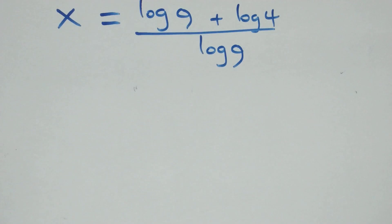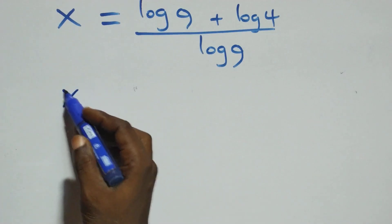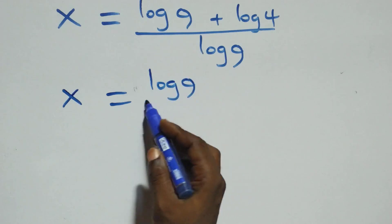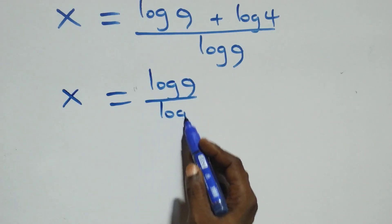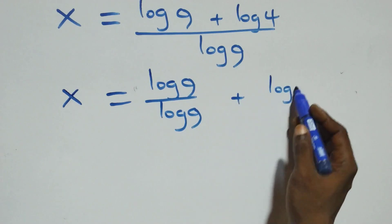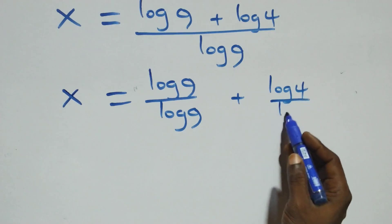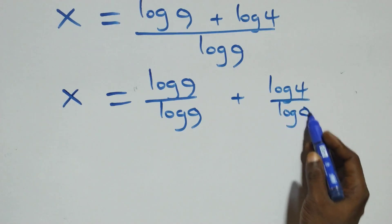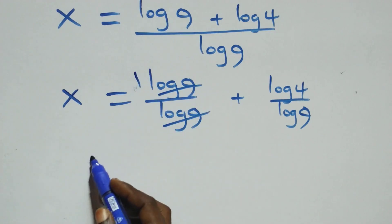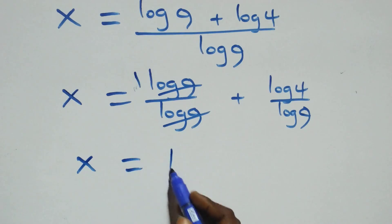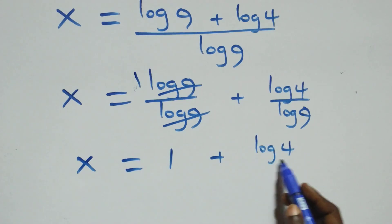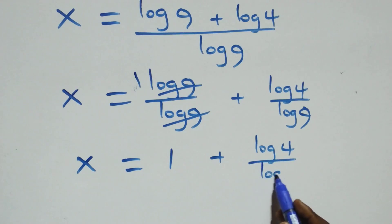Next, we separate this into two fractions: x equals log 9 over log 9 plus log 4 over log 9. Then log 9 over log 9 cancels to give 1, so x equals 1 plus log 4 over log 9.